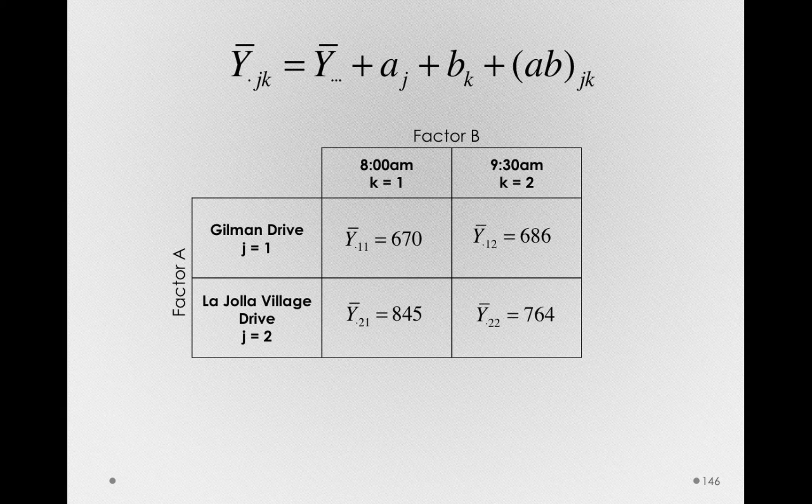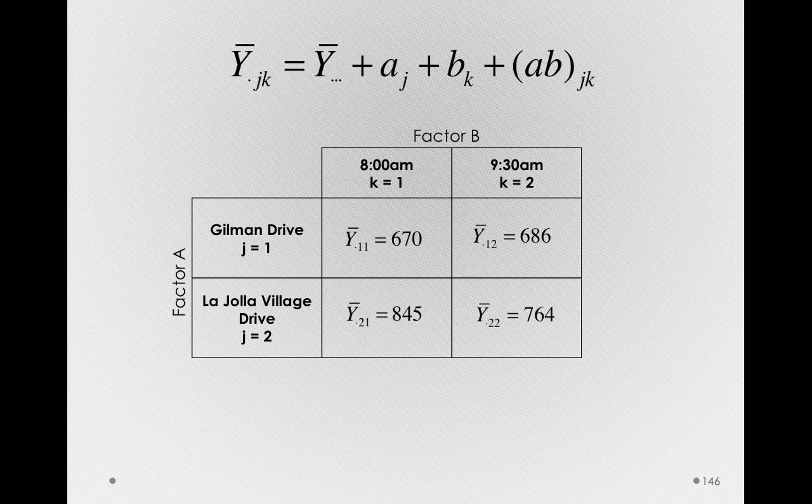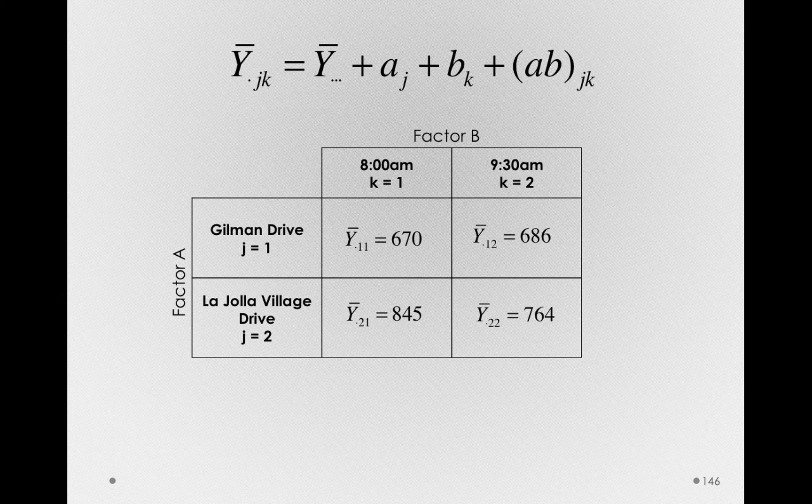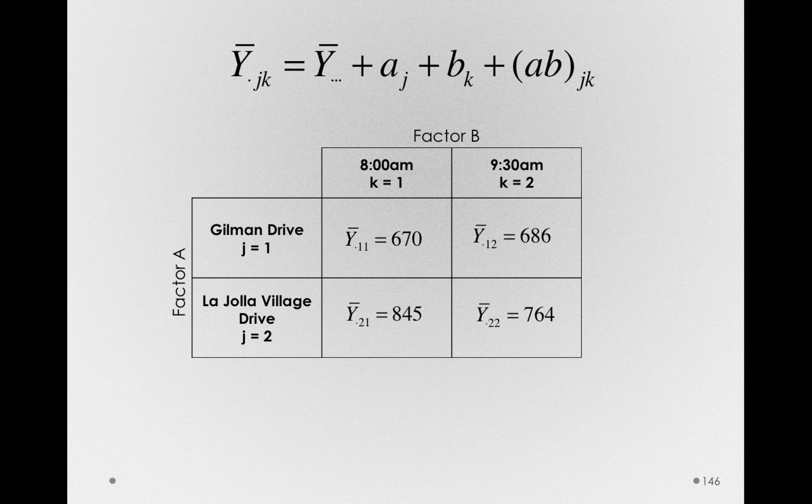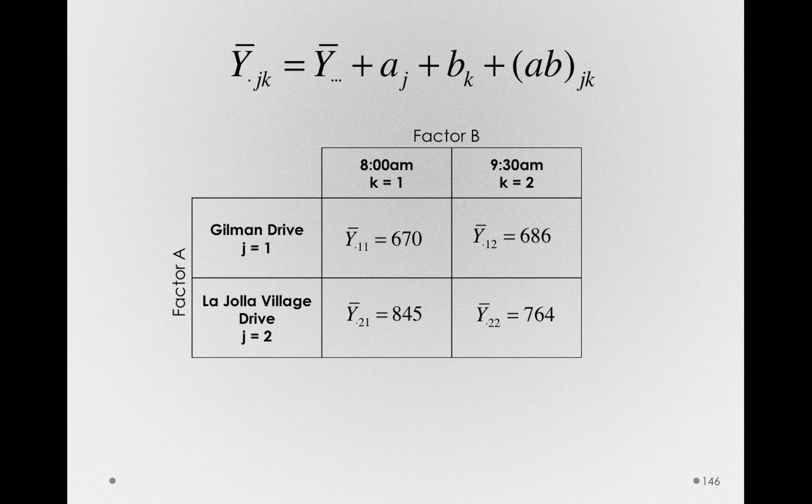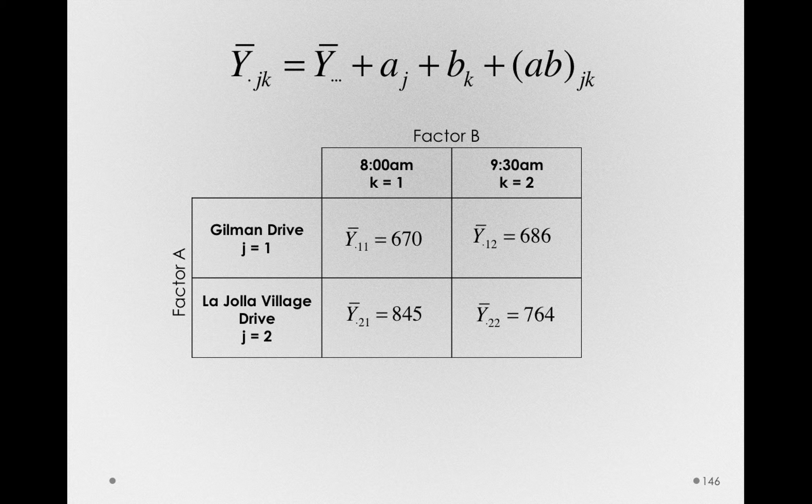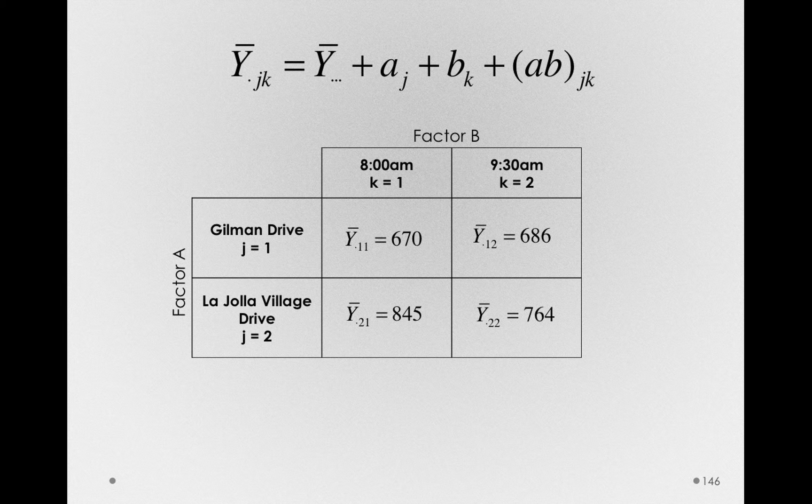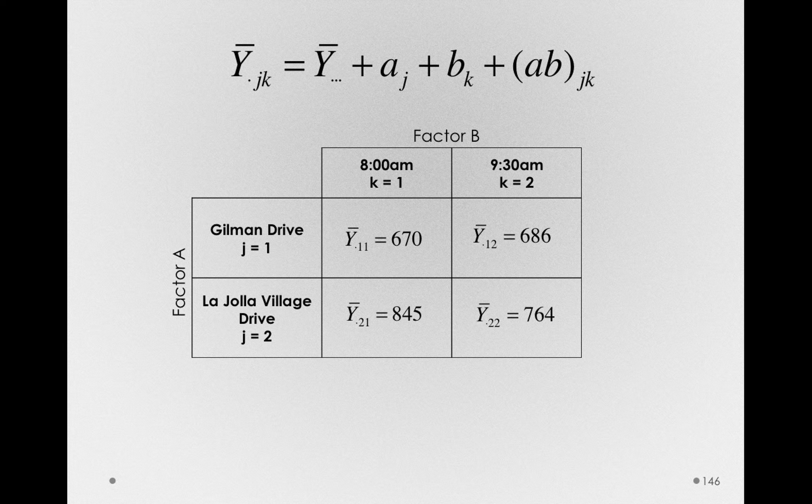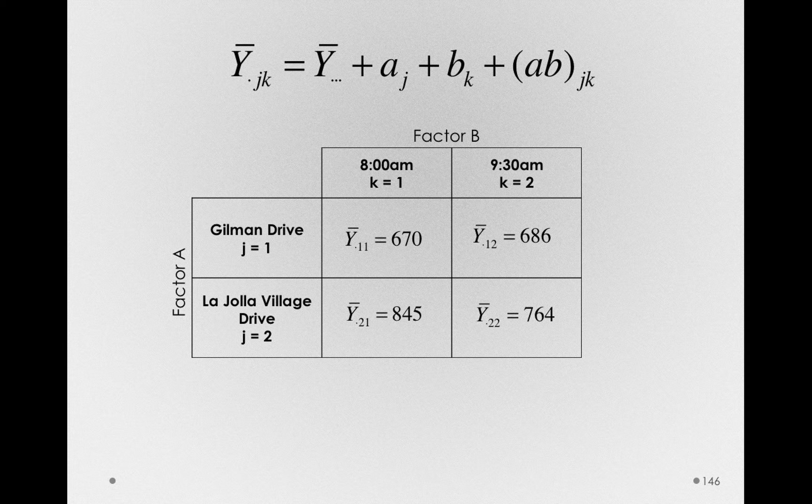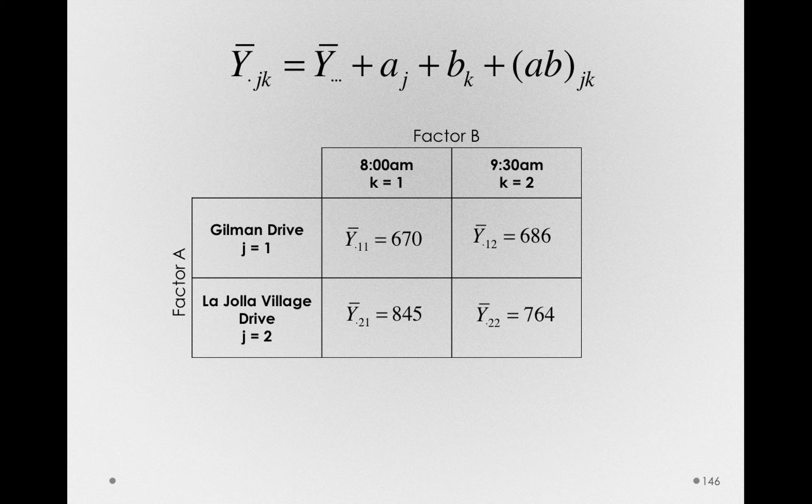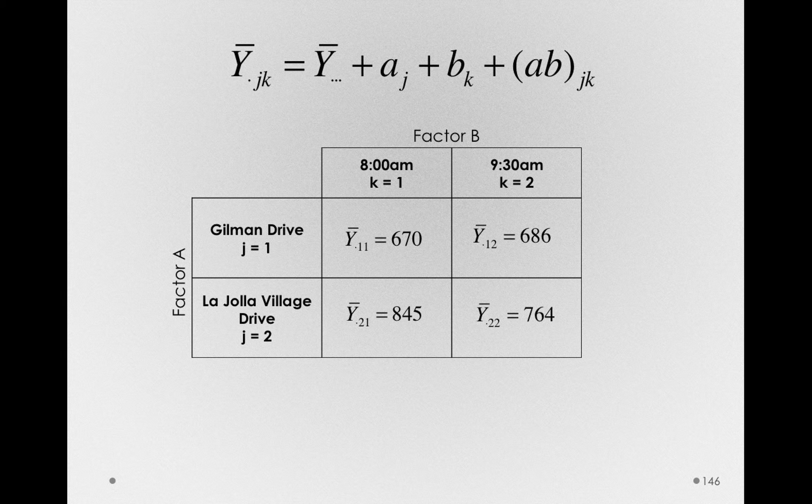One part due to the grand mean, another part due to the effect of factor A, another part due to the effect of factor B, and then finally some residual component, a component due to the interaction between factors, the degree to which the effect of factor A depends on what level we're in of factor B. Or, said differently, the effect of factor B depending on which level we are in of factor A.